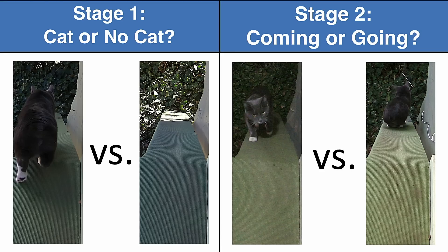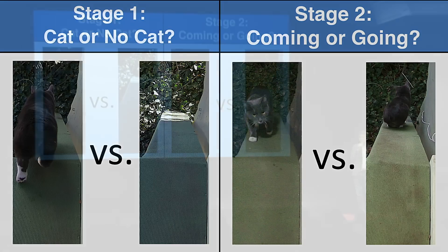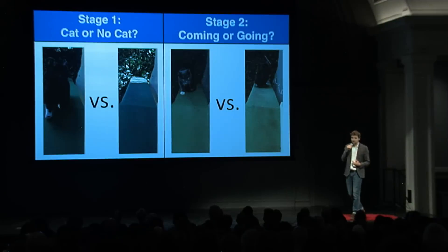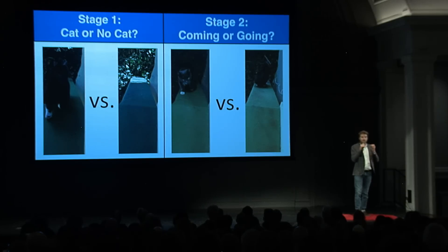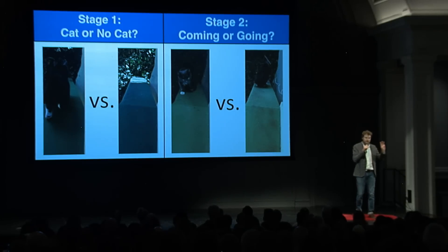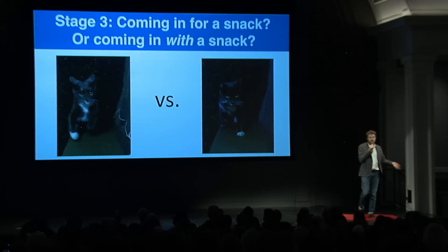If there is a cat, it calls up stage two. Stage two asks: is the cat coming or going? If the cat is coming, it's a moment of truth — it calls up stage three: is the cat coming in normally, or is the cat coming in to ruin my night?